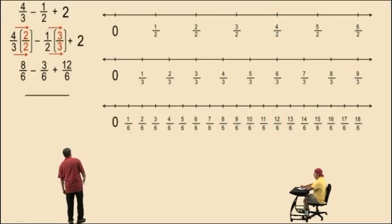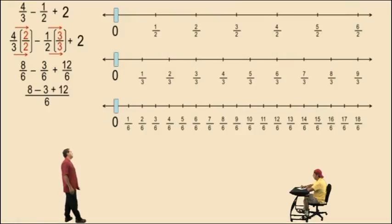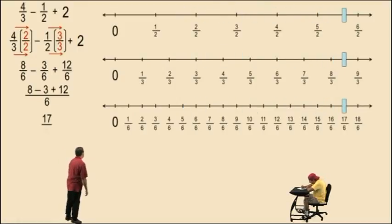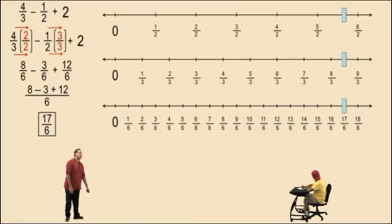Anyway, let's finish this problem here. We have all our denominators the same. Remember, the denominator remains unchanged. Now we work with our numerators, and let's perform the calculation on the number line. Let's go to 8 sixths, subtract 3 sixths, plus 12 sixths. And that gives us 17 sixths. And that's our final answer.